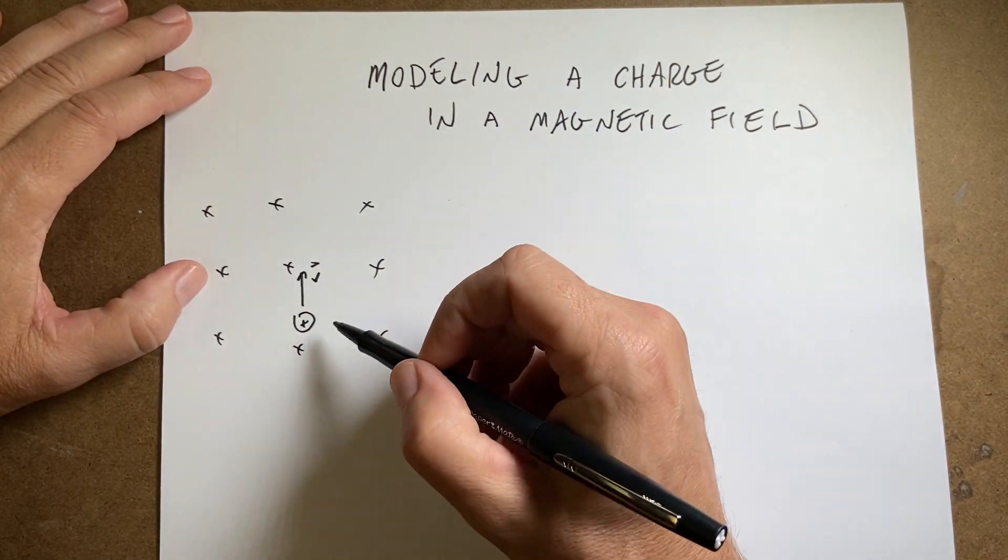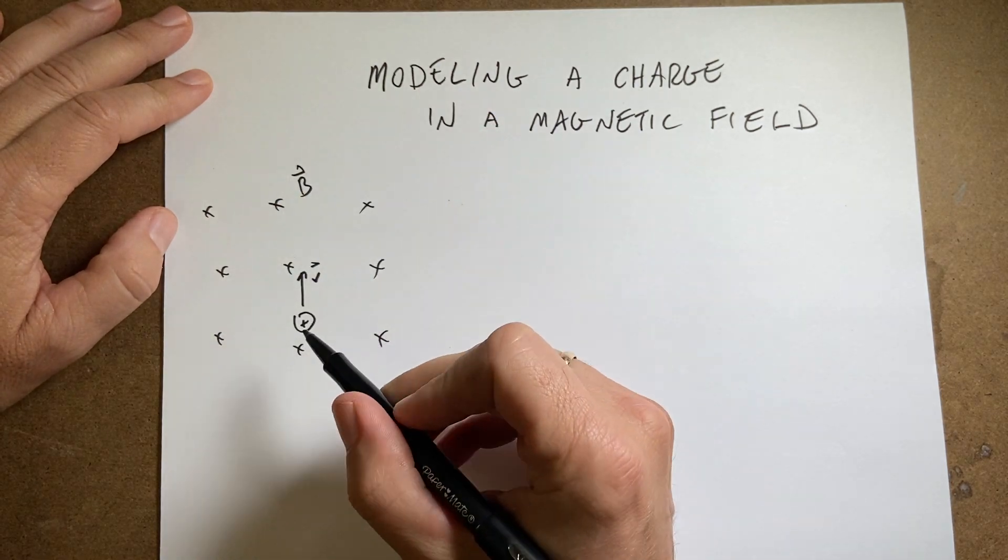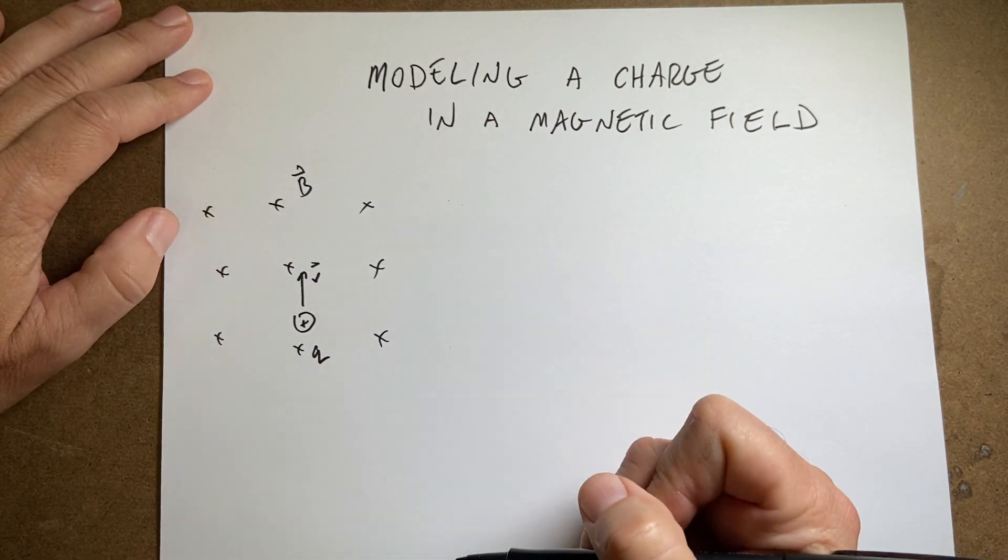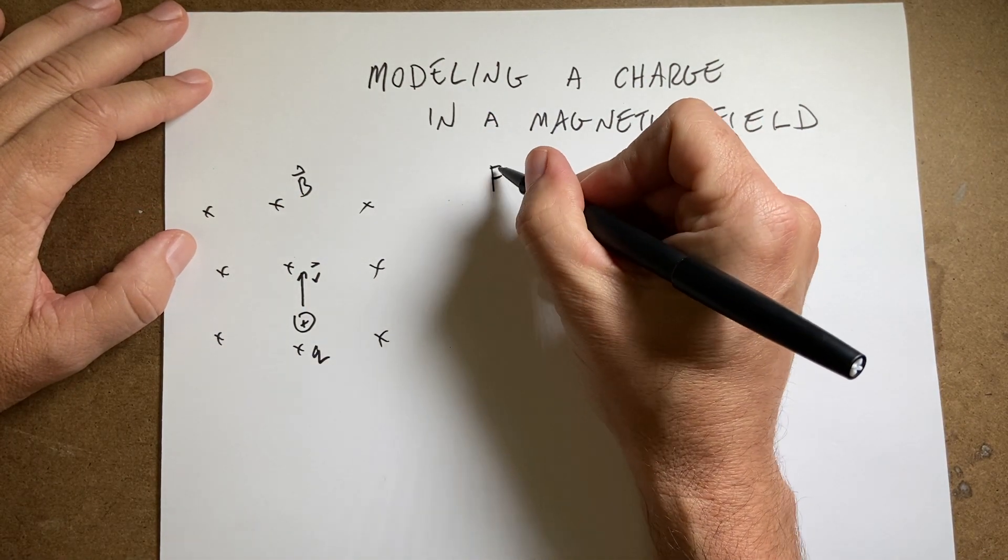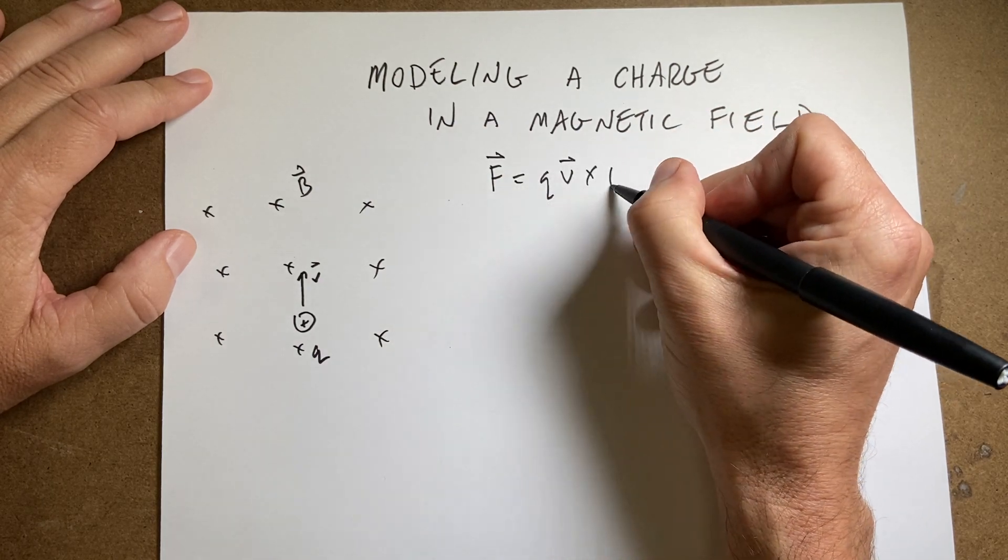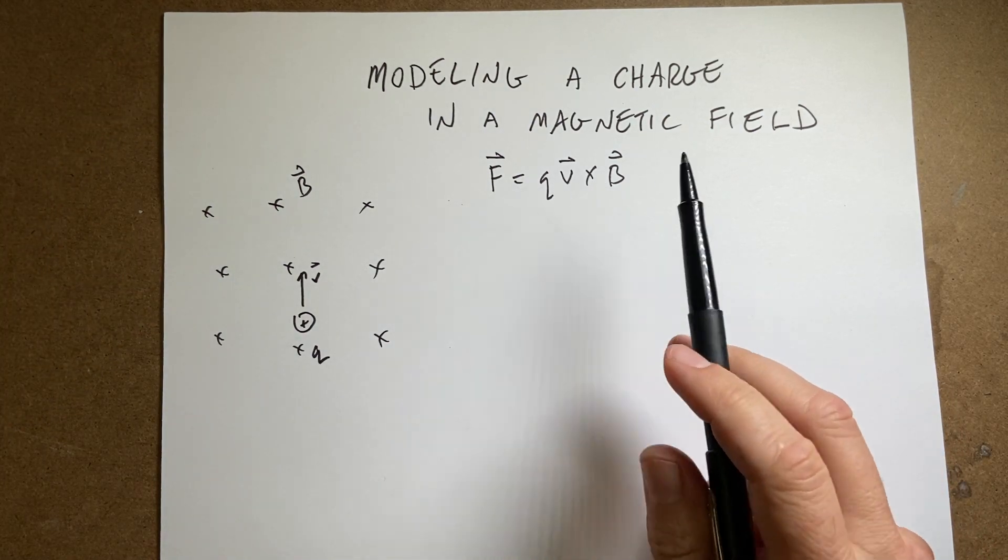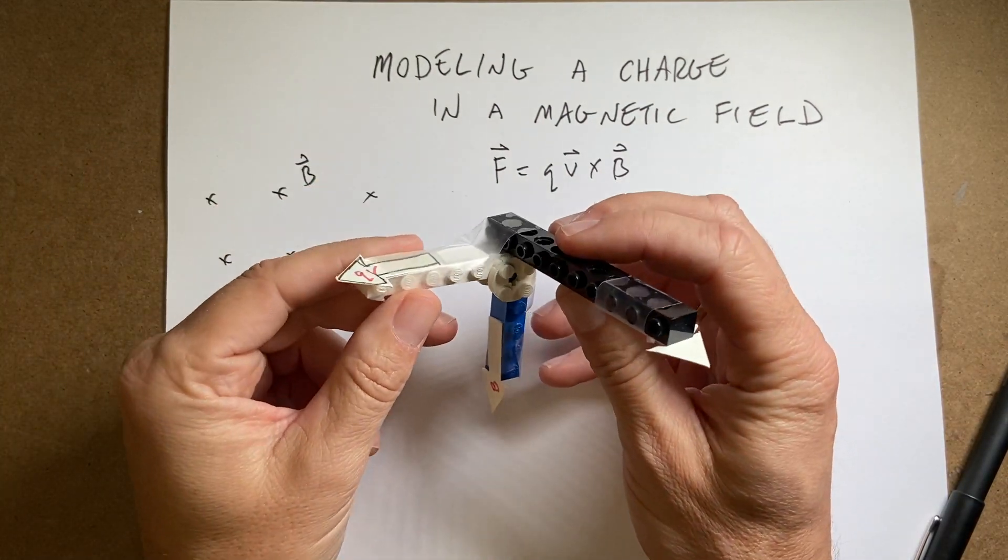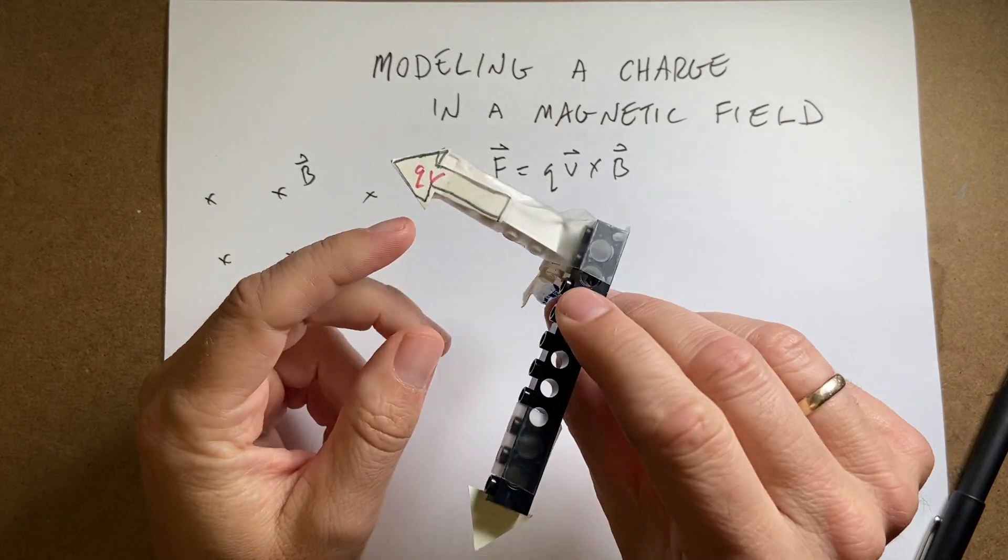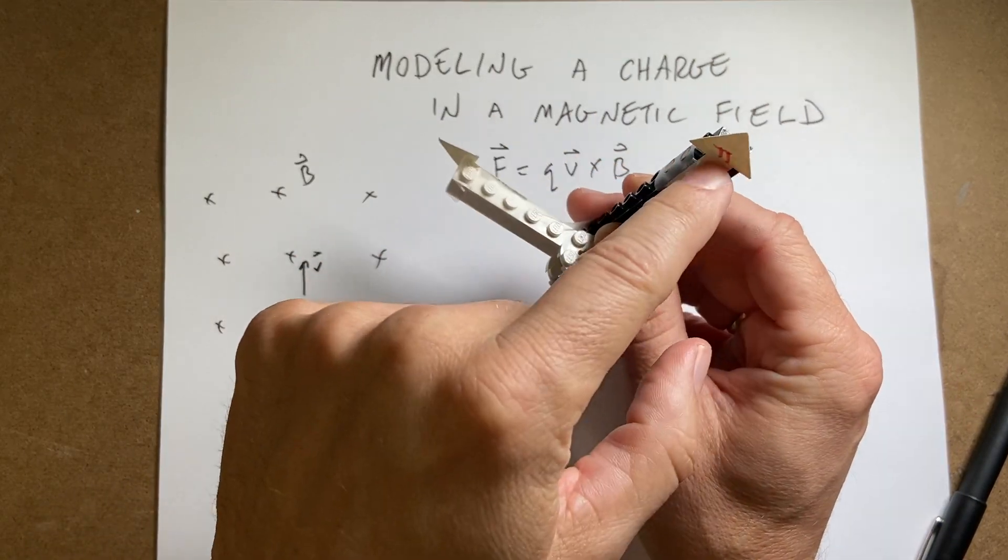So the first thing we need to know is if we have a charge in a constant magnetic field B and it has a charge Q and a velocity V, then it will have a force on it. F equals QV cross B. Where this is the cross product, so I made this little thing to remind us. If that's the direction of QV and that's the direction of B, then that's the direction of the force.